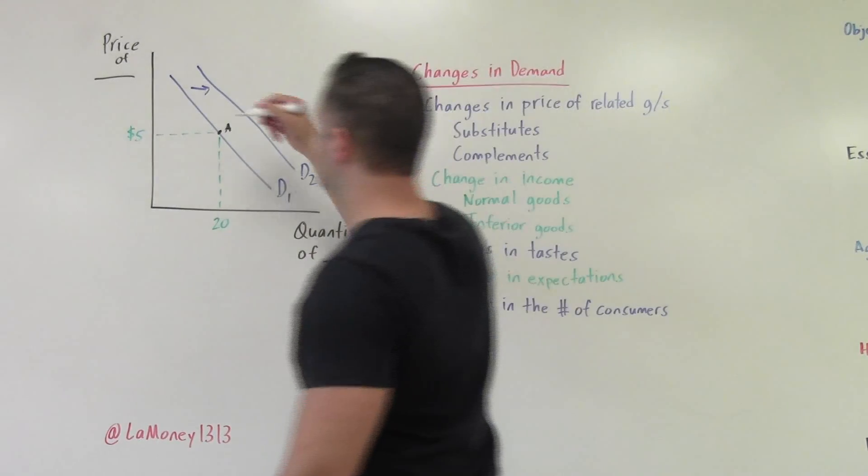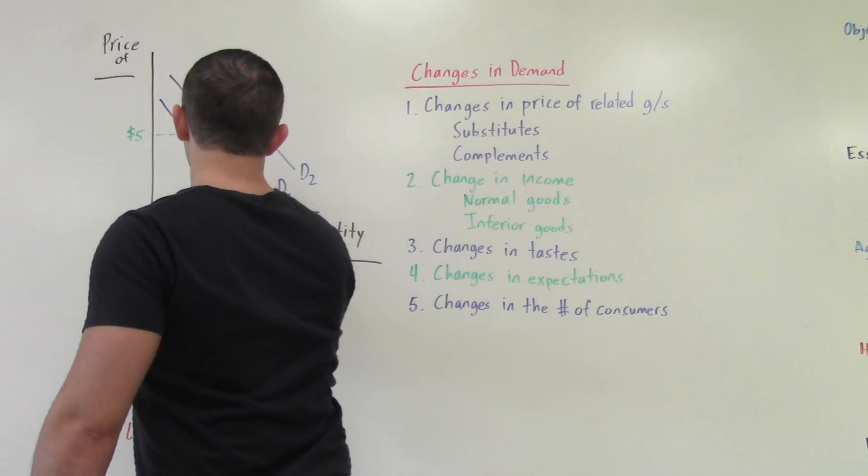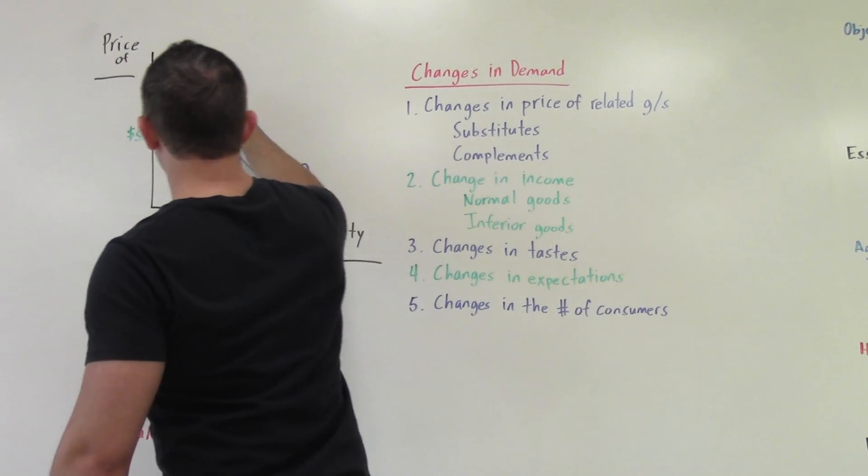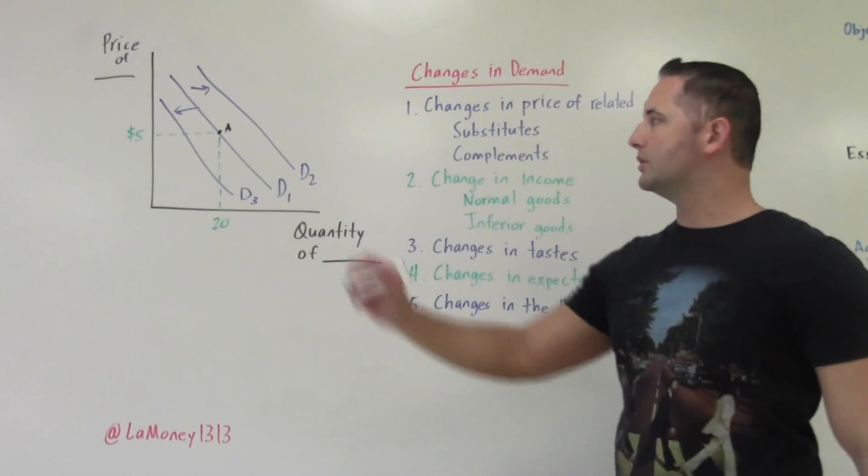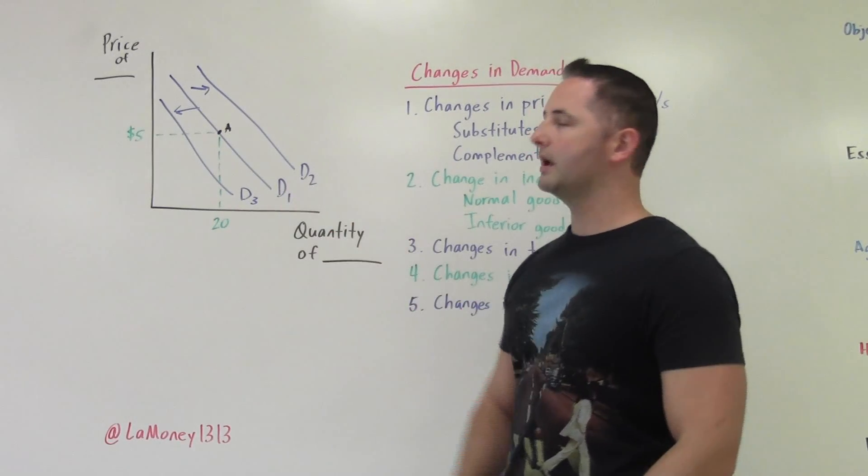On the other hand, we could also have a decrease in demand. And that's going to shift us to the left. So we show that a couple ways. We show it by our numbering. One, two, three.